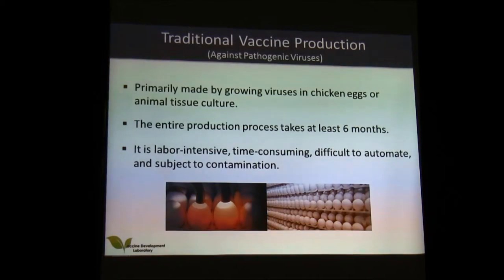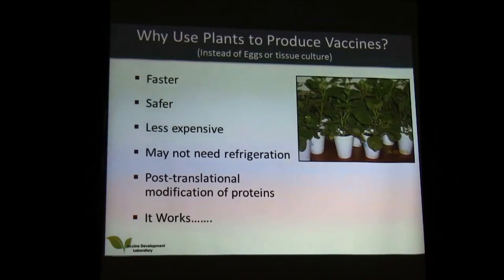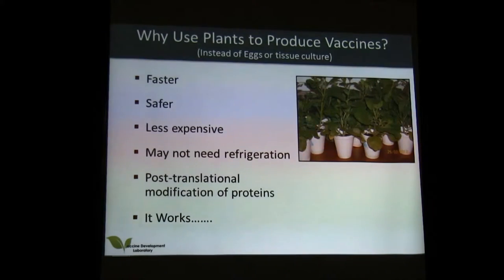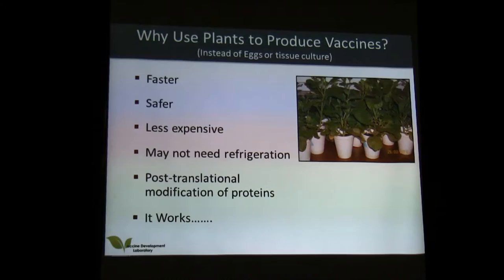Generally, getting a vaccine shot is expensive, especially in Africa where governments don't subsidize most vaccine shots. What we would like to do is move away from traditional production in eggs and tissue culture and instead do this in plants. The advantage is that in plants it's faster — from the time you start making your vaccine to when you can extract it and have it ready for use is about ten days. It is also safer, as you are unlikely to get any pathogens harbored in plants that can affect mammals.